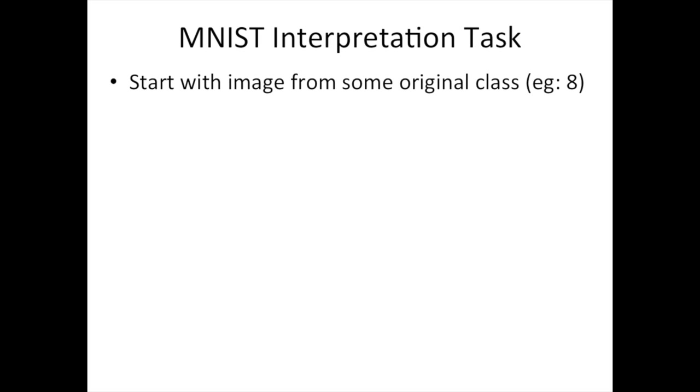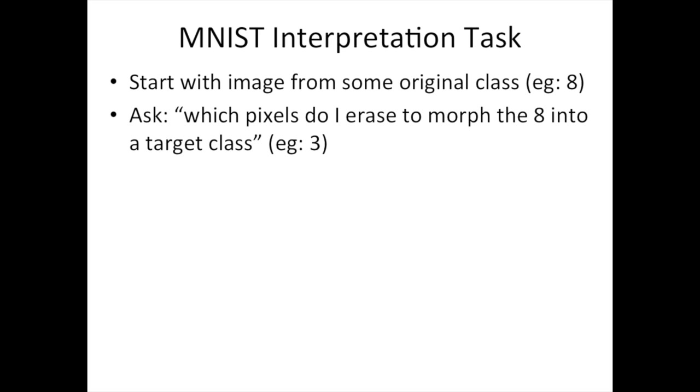We trained a model with two convolutional layers and one fully connected layer to classify MNIST digits. Our interpretation task for MNIST is as follows: we start with an image from some original class, say an 8, and we ask which pixels do I erase to morph the 8 into a target class, such as 3?